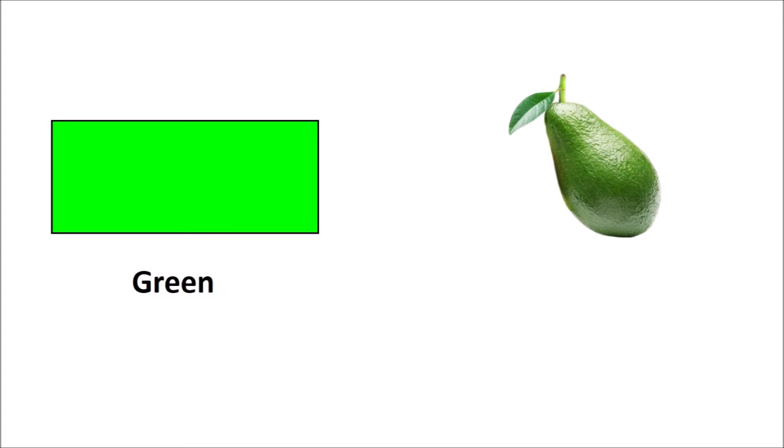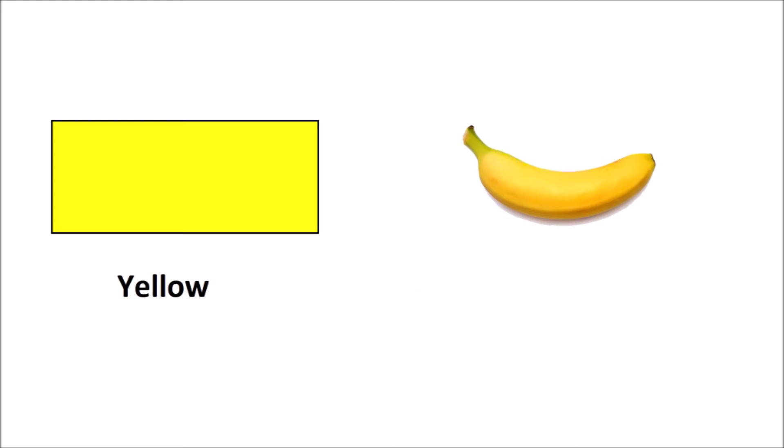Green, an avocado is green. Yellow, a banana is yellow.